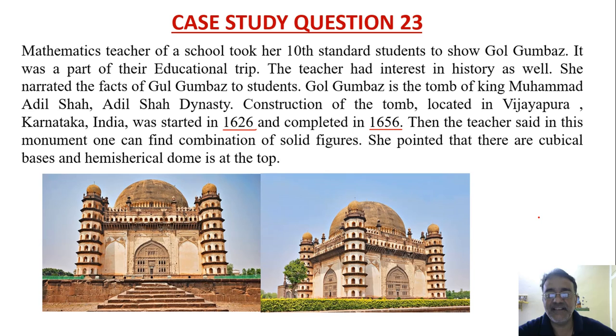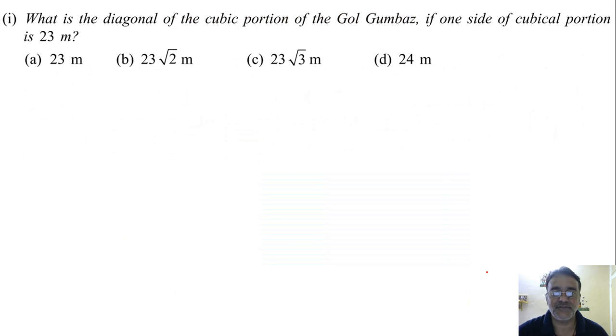Then the teacher said in this monument one can find the combination of solid figures. She pointed that there are cubical bases and hemispherical dome is at the top. See you can see here hemispherical dome. This is the front view and this is the side view. So based on this now we have some questions. So let us move towards the first question.